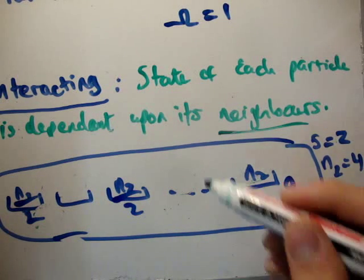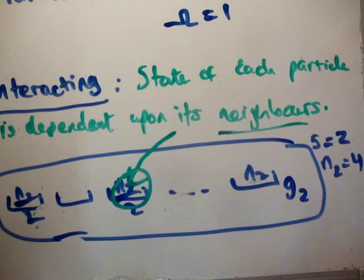So the point is, I can put more particles in here, or to any one of these states, if they are non-interacting. But if they are interacting, the multiplicity is reduced.